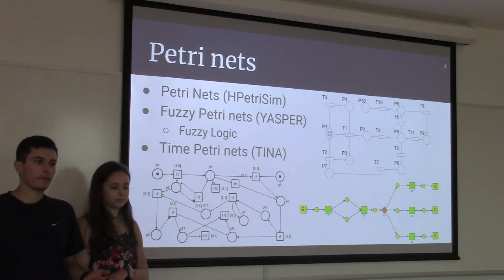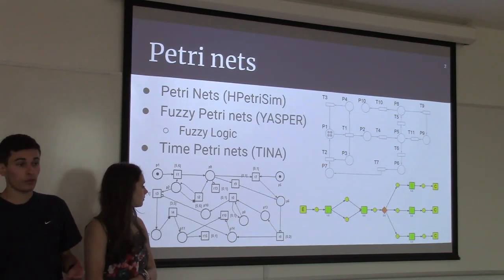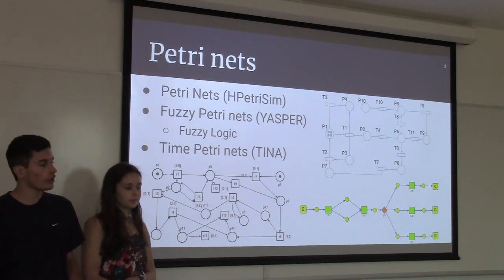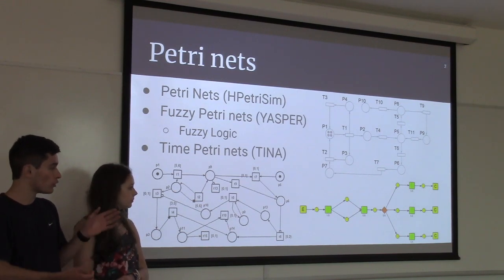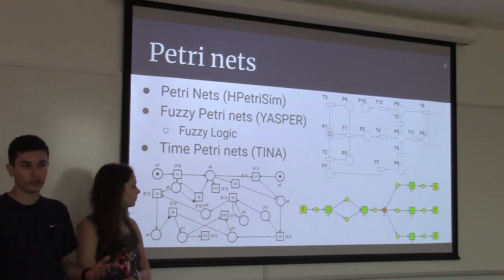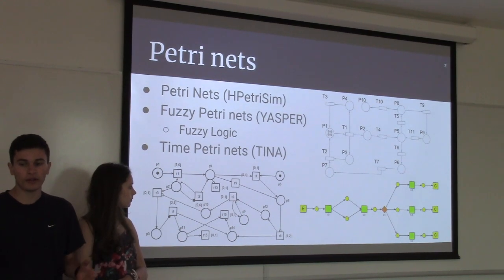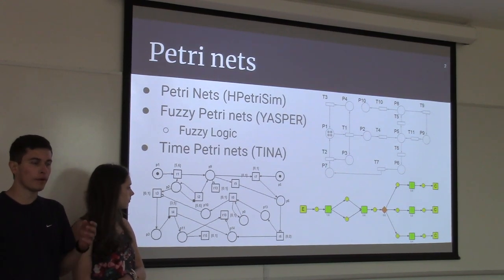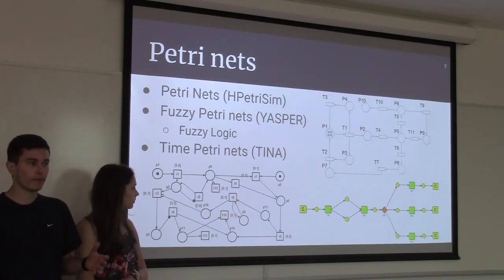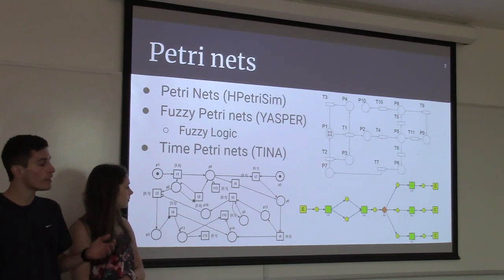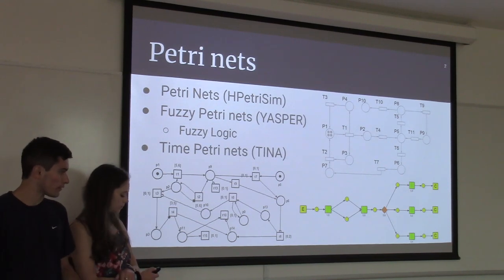Another type of high-level Petri Net is a time Petri Net. These incorporate time and durations into the firing of transitions, shown by two numbers in square brackets. The first number represents the amount of time that must pass before the transition is able to fire, and the second number represents the amount of time that can pass before the transition is guaranteed to fire. The program used to make and simulate these Petri Nets is called TINA, and an example net is shown on the left.